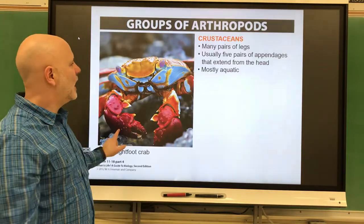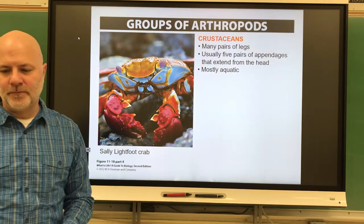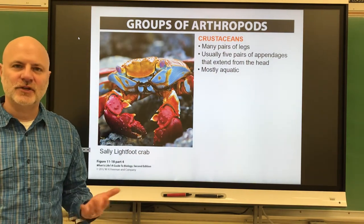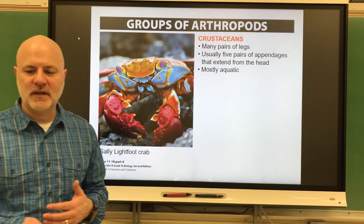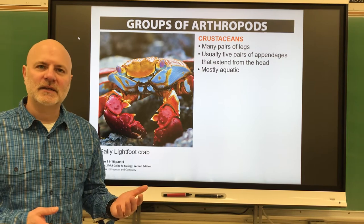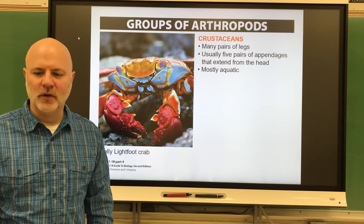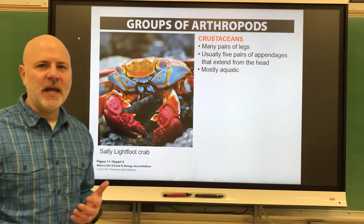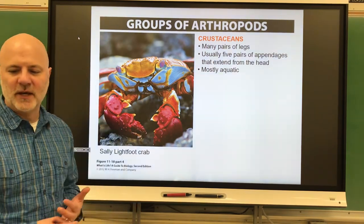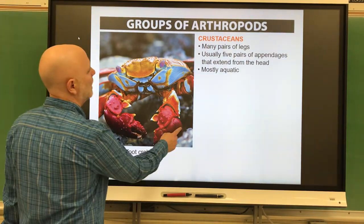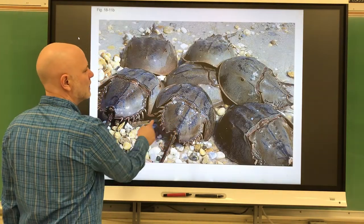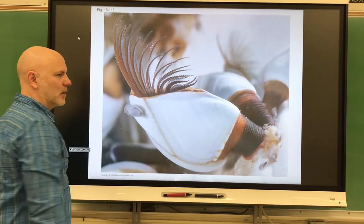Next are the crustaceans: lobsters, crabs, crayfish, shrimp, sowbugs, horseshoe crabs, barnacles, as well as pill bugs — also called roly-polies. These have many pairs of legs and usually five pairs of appendages extending from the head as well. They're mostly aquatic. These are showing horseshoe crabs and a barnacle.